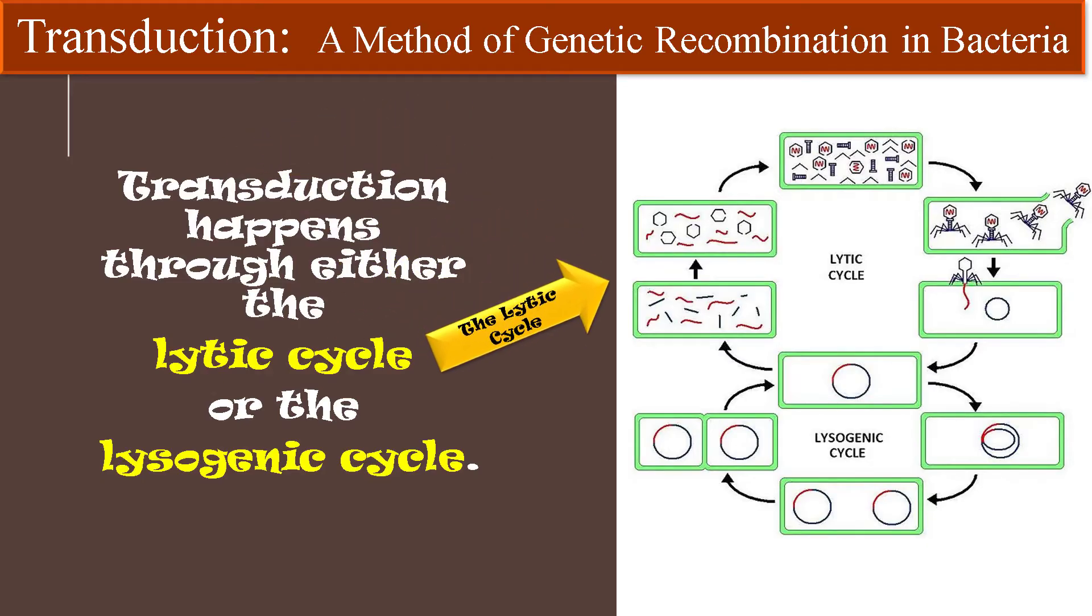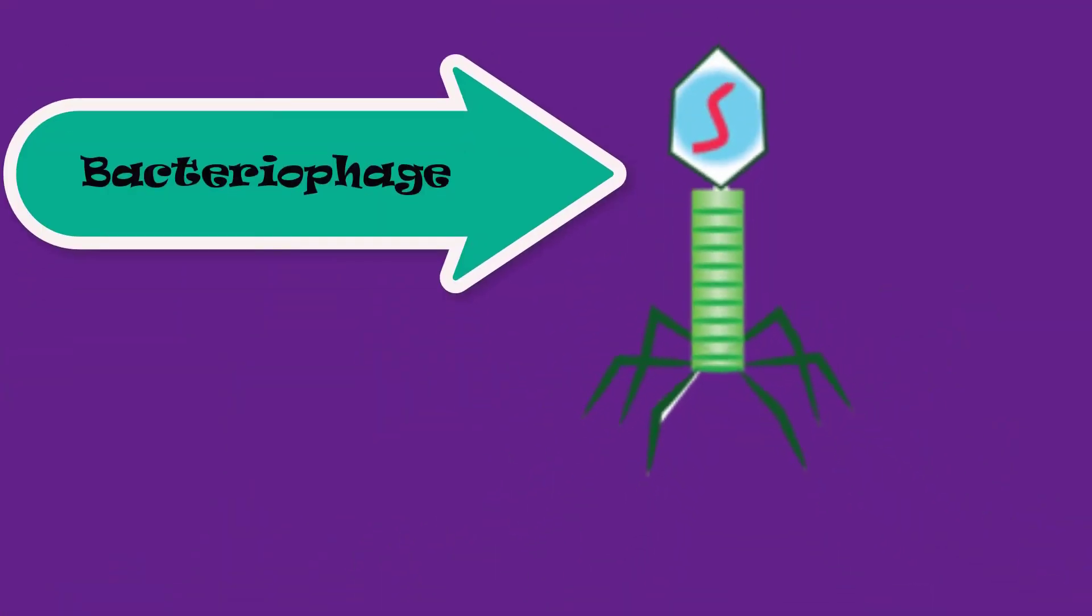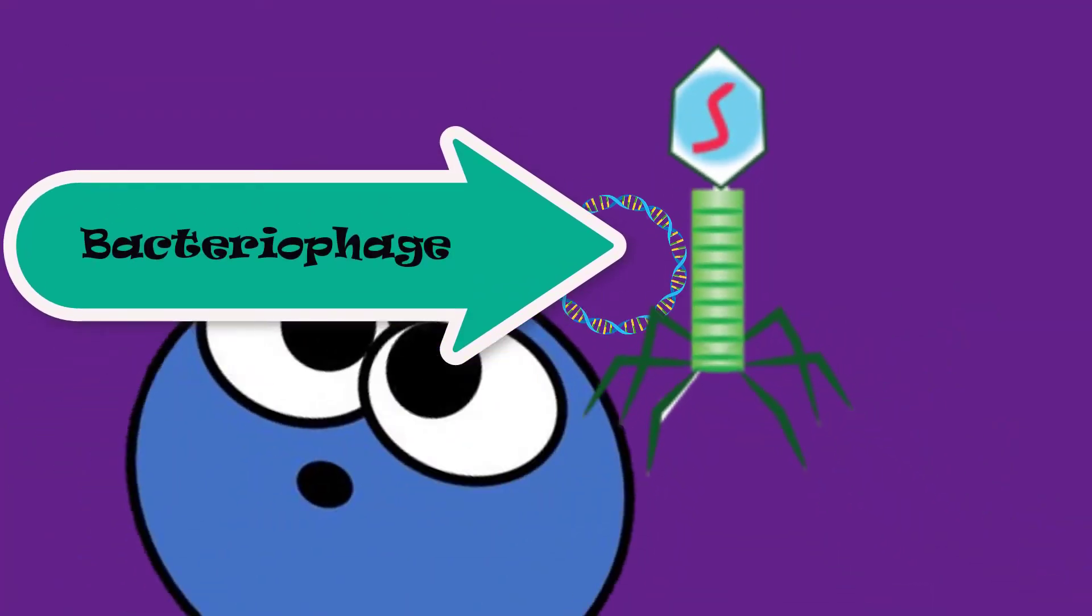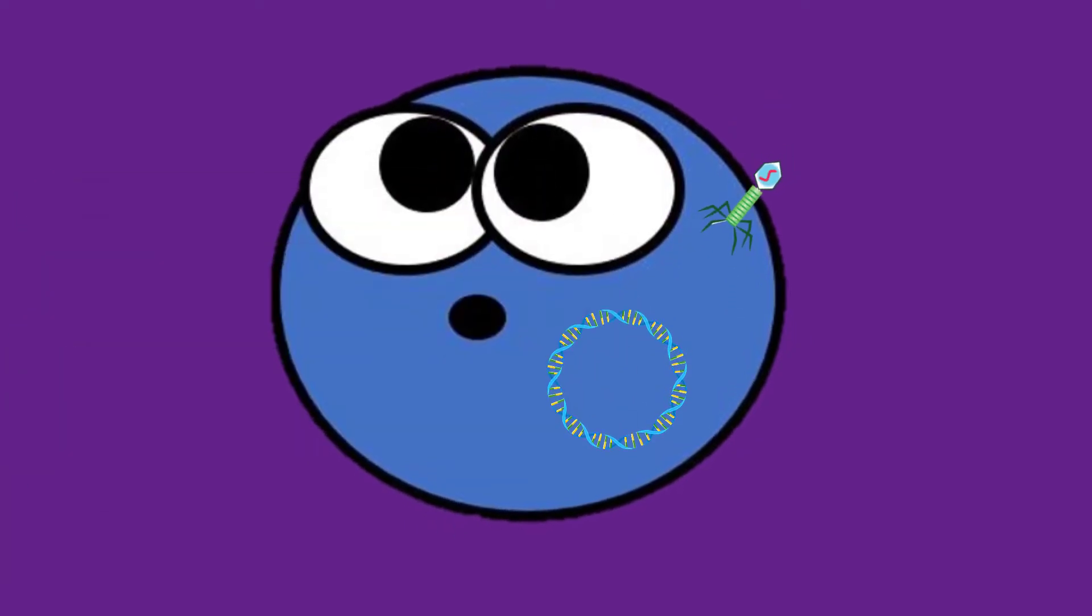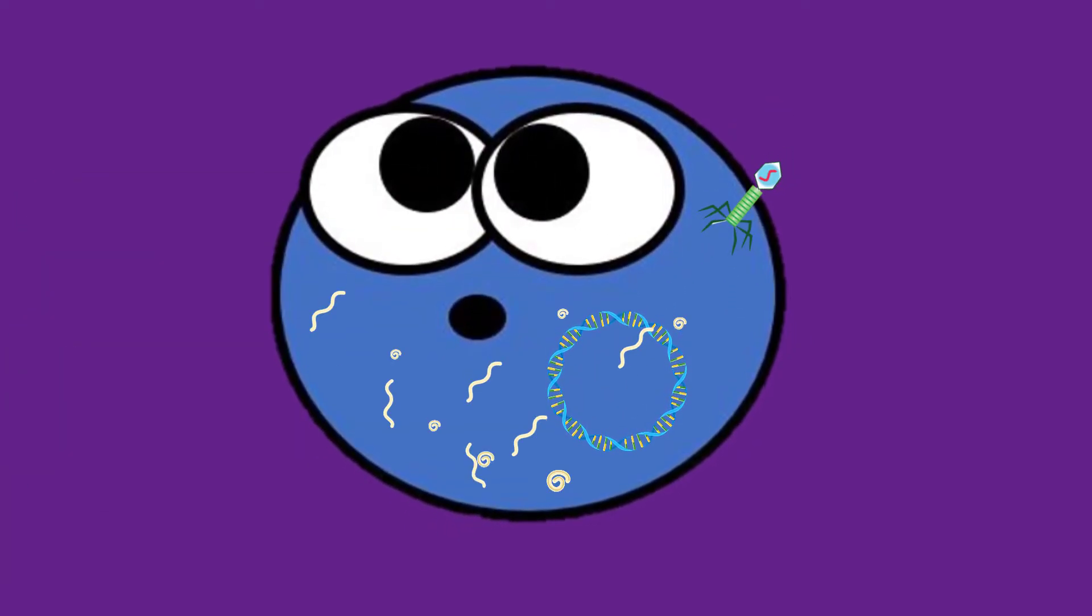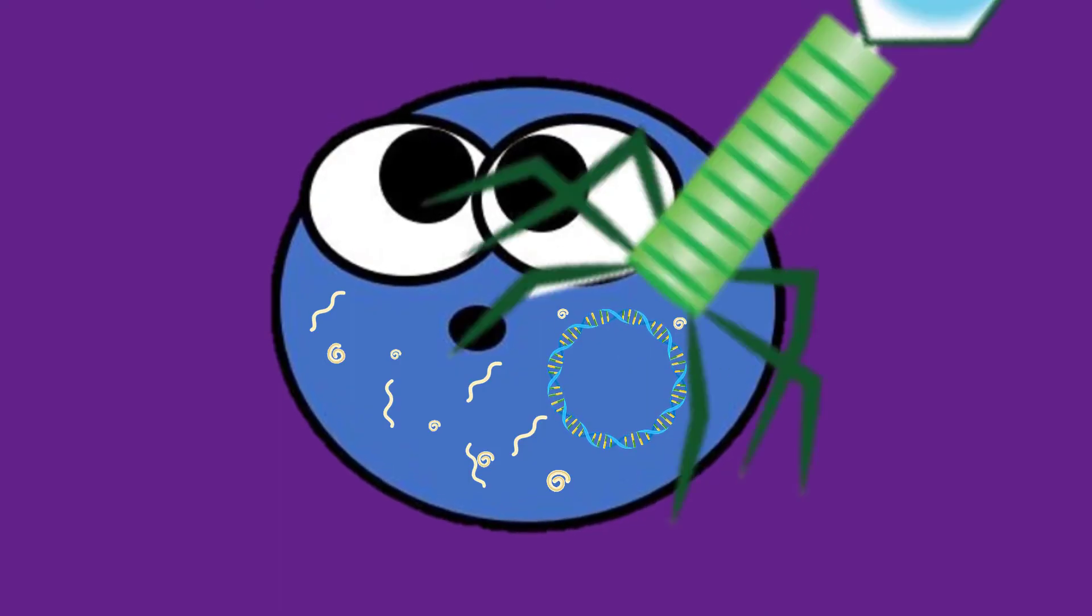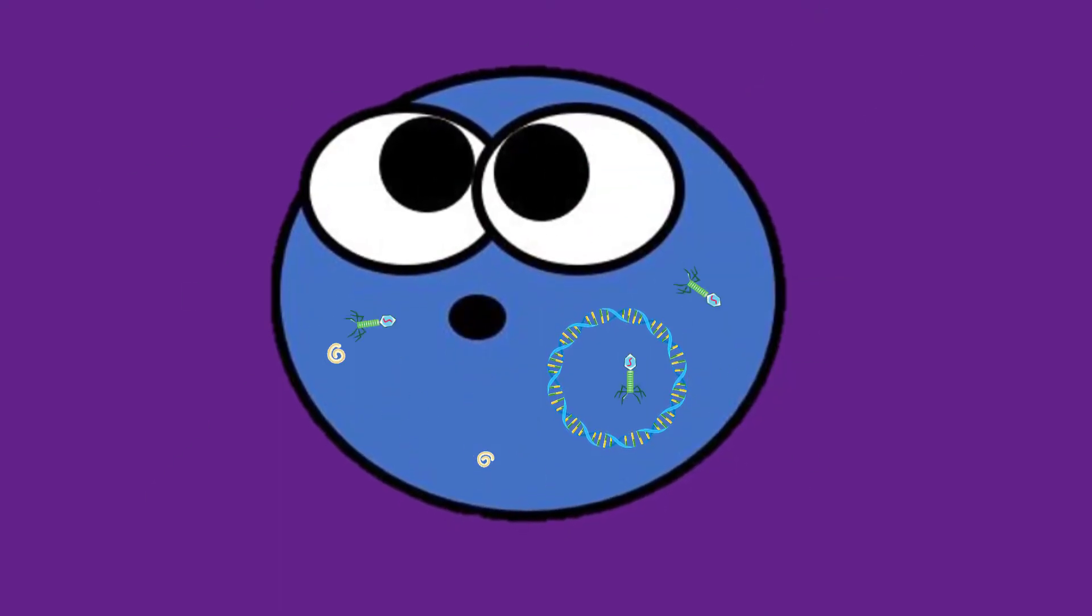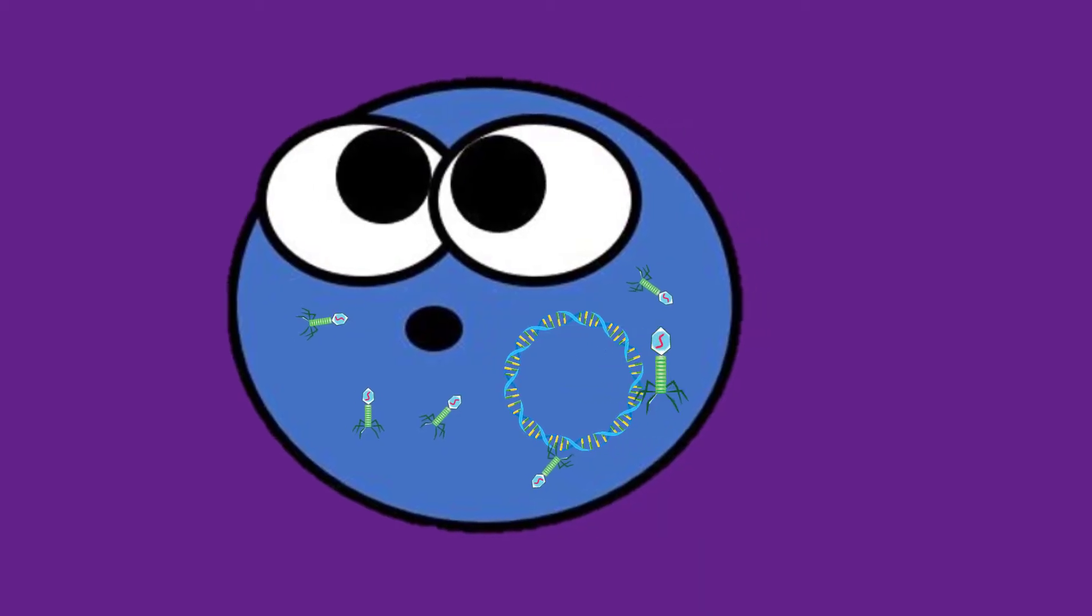Transduction happens through either the lytic cycle or the lysogenic cycle. When bacteriophages normally infect a bacterial cell, the virus's genetic material harnesses the host cell's replicational, transcriptional, and translational machinery to reproduce itself.